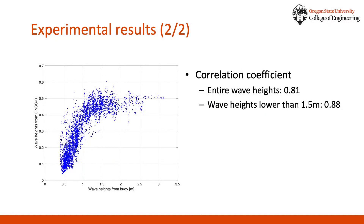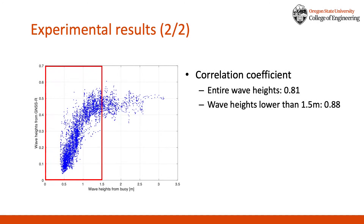For the numerical comparison between GNSS IR and the buoy, the correlation coefficients were computed. As expected, a high correlation coefficient of 0.81 was confirmed. In particular, the correlation coefficient improved to 0.88 when the wave heights were lower than 1.5 meters. The corresponding result shows that the proposed approach is feasible to observe wave height, and it can be a promising complementary tool for monitoring waves.